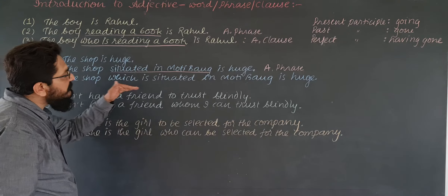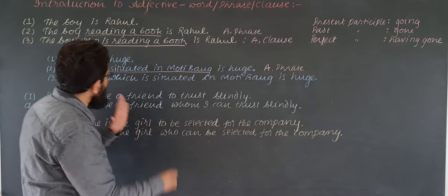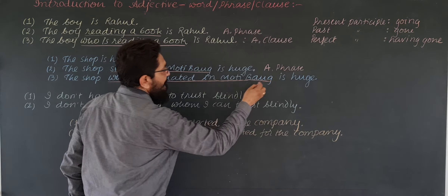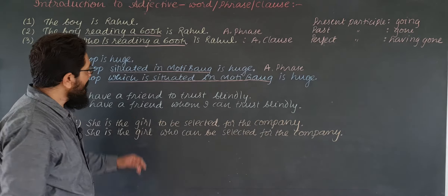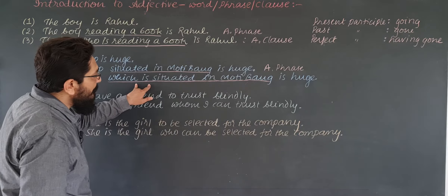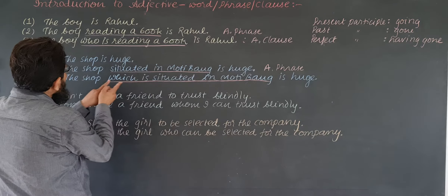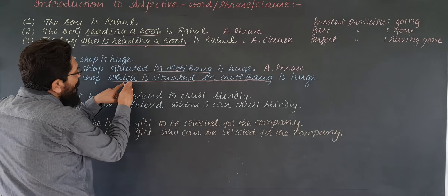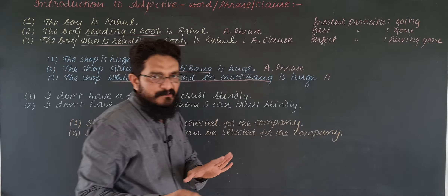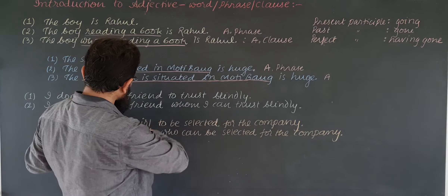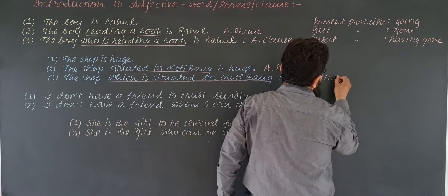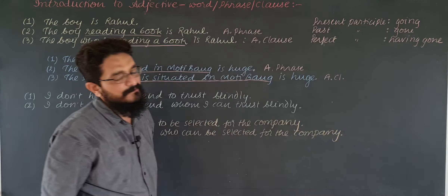'The shop which is situated in Motibag is huge.' 'Which is situated in Motibag' — this is a clause because subject and finite verb are found. It adds something to the meaning of noun 'shop,' so it is adjective. Whether it is a clause or phrase, it is adjective. But it is a clause because there is subject-finite verb combination. So this is called adjective clause.